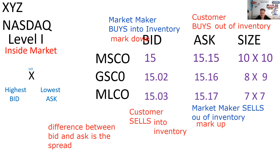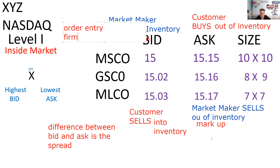You have to be able to look on your exam and see, for example, that Goldman Sachs is willing to buy eight round lots into its inventory at 15.02, and Goldman Sachs — GSCO — is willing to sell 900 shares out of its inventory at 15.16. Now, if you work at an order entry firm — a broker-dealer that does not have securities in inventory, like Robinhood, Schwab, TD Ameritrade, or Fidelity — you need to see which of these market makers have which quote, because you need to know who to call to do business.